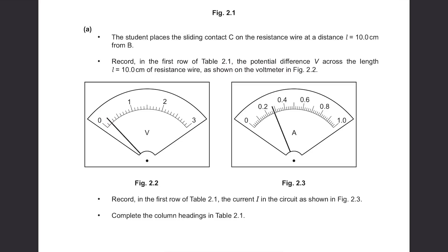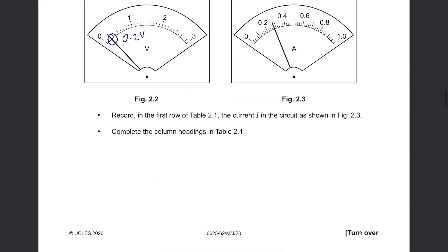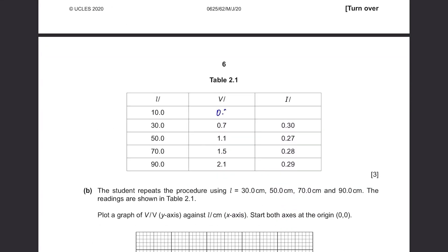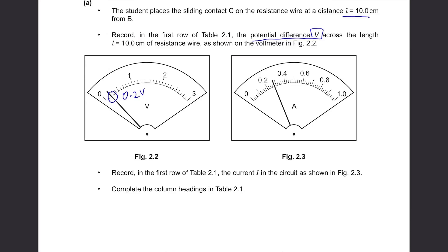The student places the sliding contact C on the resistance wire at a distance L equals 10 cm from B. Record in first row of table 2.1 the potential difference V across the length L equals 10 cm of resistance wire as shown on the voltmeter in figure 2.2. In figure 2.2, it's 0.2 volts so write 0.2 here. Record in the first row of table 2.1 the current I in the circuit as shown in figure 2.3. In figure 2.3, the center is 0.3 so this is 0.28 amperes.